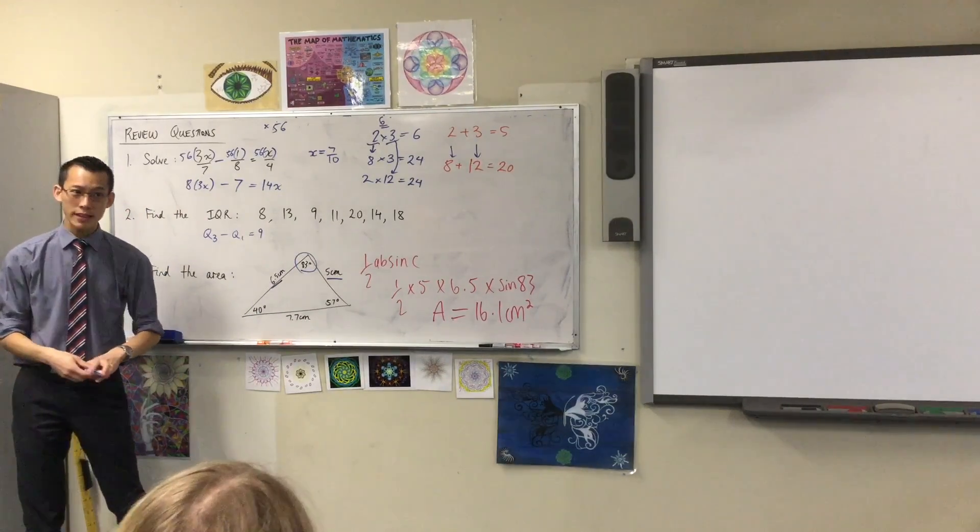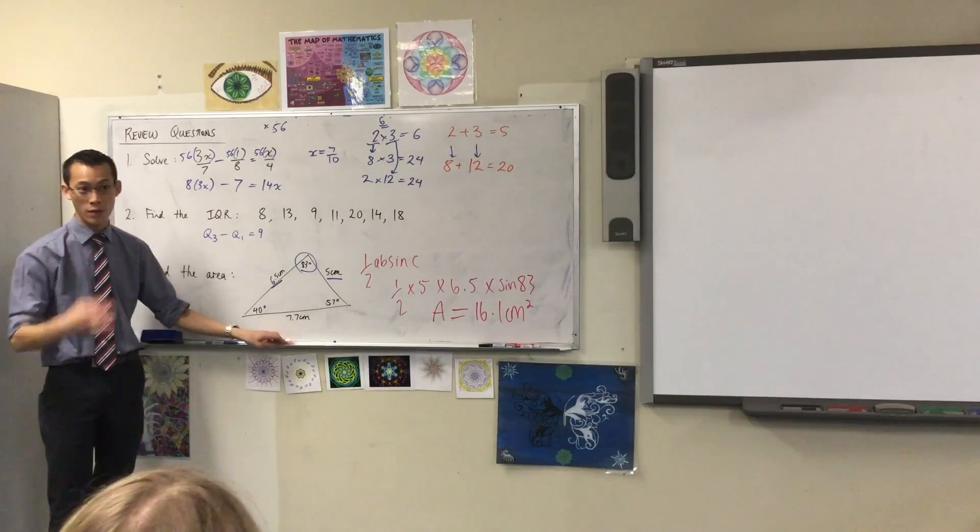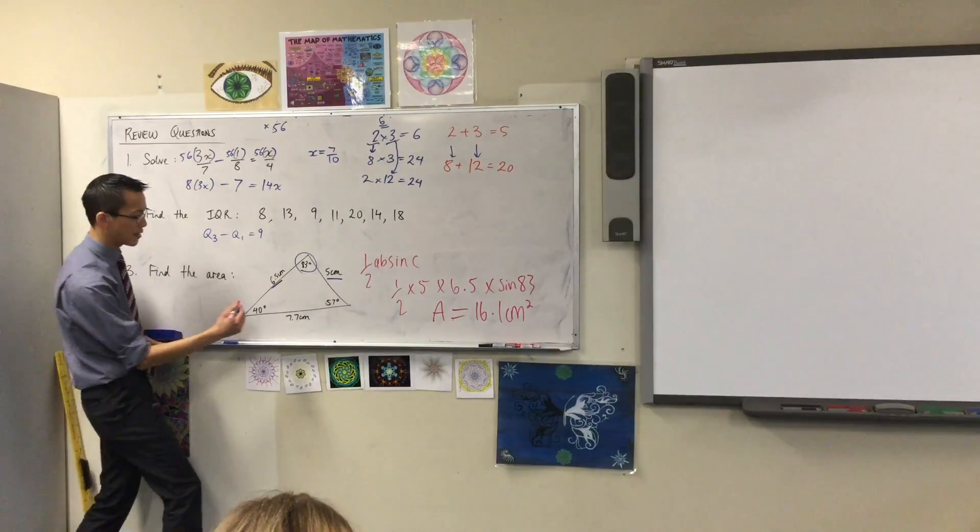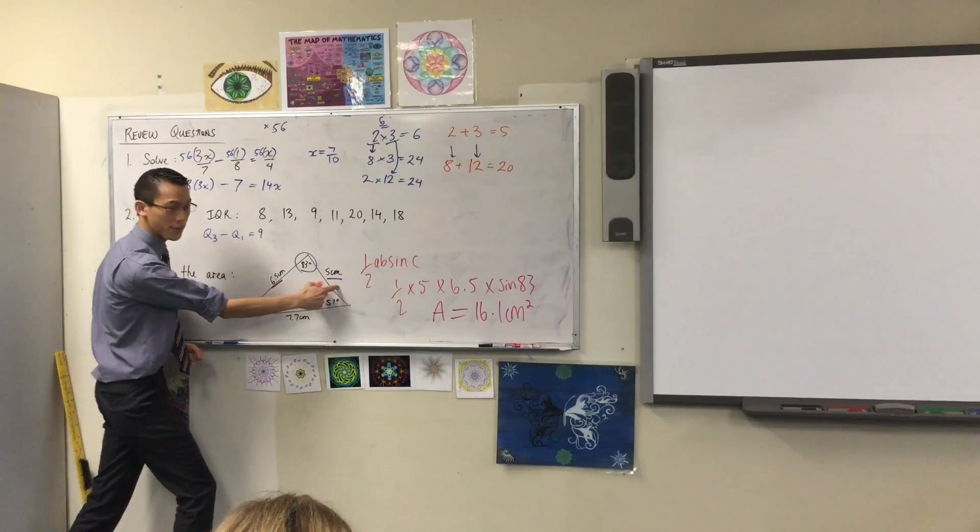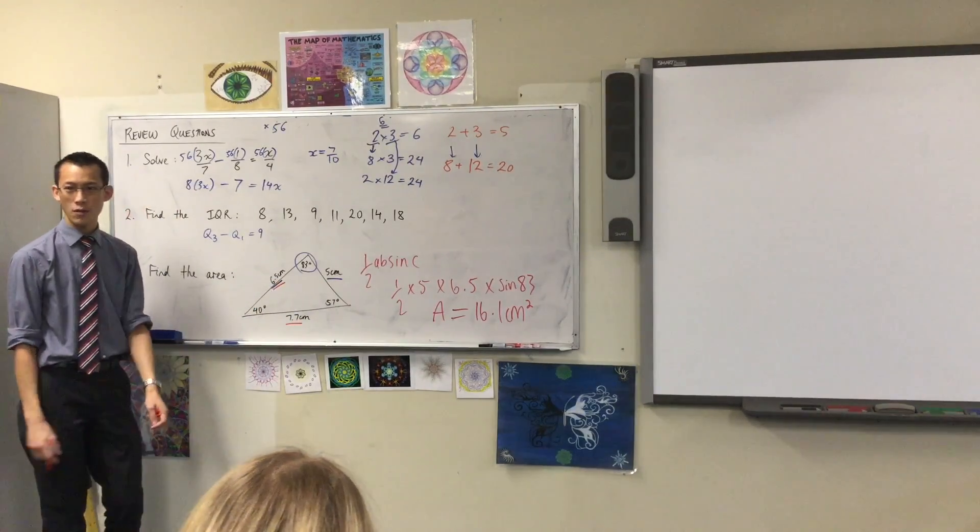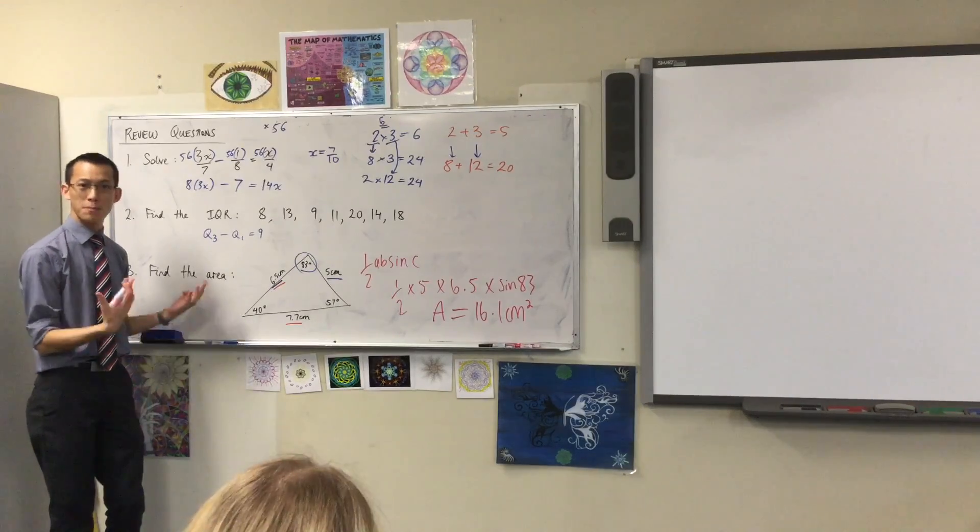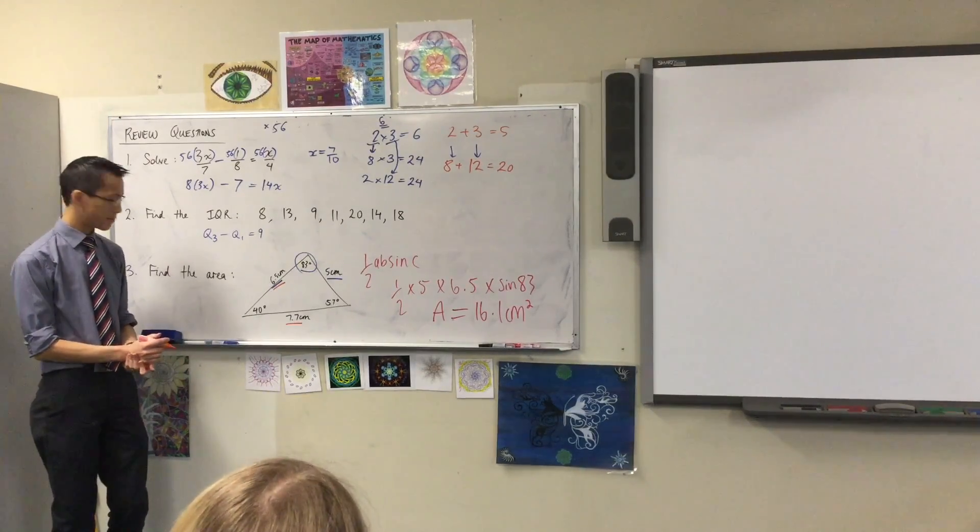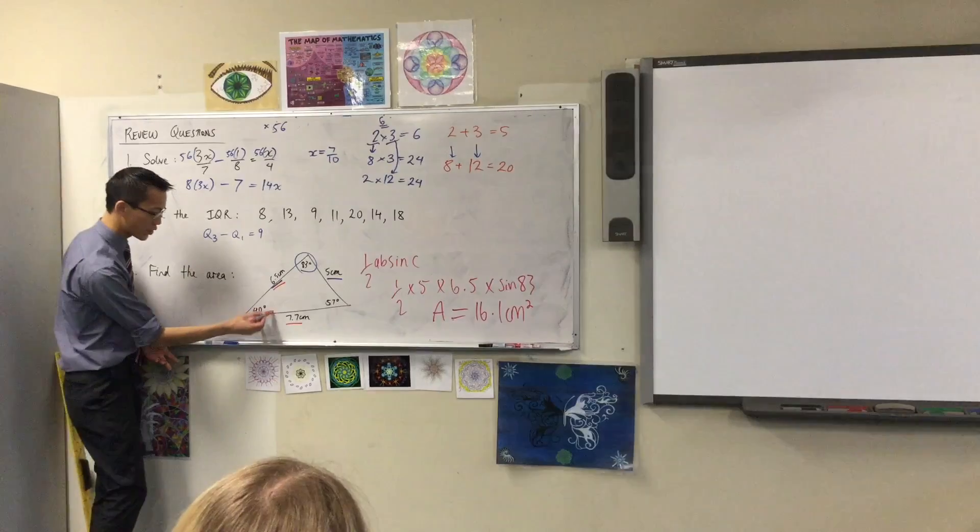Now, your working might be completely different, because there's three different ways you can work this area out. You could have picked, instead of 6.5 and 5, you could have picked 6.5 and 7.7, right? If you did that, you'd pick a different angle. Which one? The included one, which is 40. Now, just quickly, unless you already did this, quickly go ahead and verify.